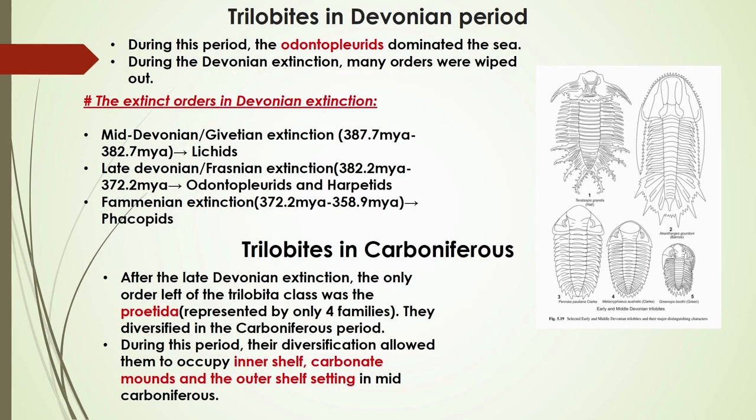Most trilobite orders went extinct in the Devonian period, and the Odontopleurida dominated the sea. The Givetian, or mid-Devonian extinction, wiped out the Lichids. The late Devonian extinction wiped out the Odontopleurida and the Harpetida, and the Famennian extinction wiped out the Phacopida.